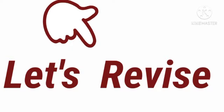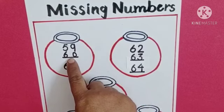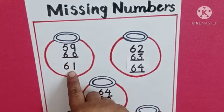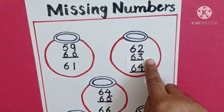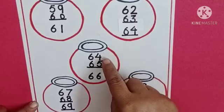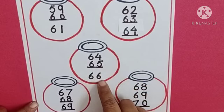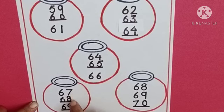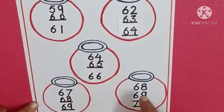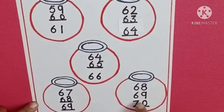5, 9, 59. 6, 0, 60. 6, 1, 61. 6, 2, 62. 6, 3, 63. 6, 4, 64. 6, 4, 64. 6, 5, 65. And 6, 6, 66. 67, 68. And 69. Here are 68, 69. And 7, 0, 70.